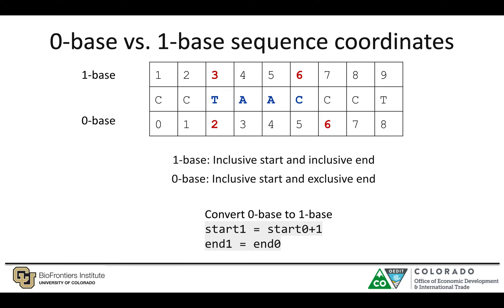One important thing to highlight about the various file formats is that there are different coordinate systems used. Namely, there is a zero-base and a one-base sequence coordinate format. The one-base coordinate system labels the first position as one, and it is inclusive at both the start and end coordinates. The zero-base coordinate system starts at position zero, is inclusive at the start, and exclusive at the end. So for a toy example with the sequence T-A-A-C, the start coordinate is included in the annotation and the stop coordinate is also included.